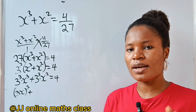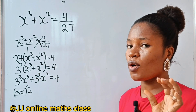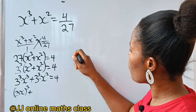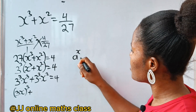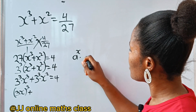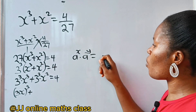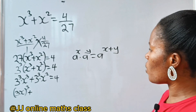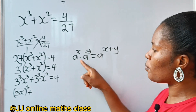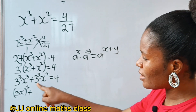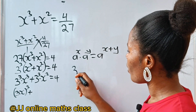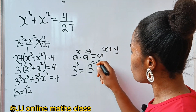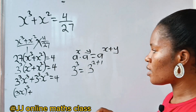Now let's recall the law of indices, or exponents, which states that a to the power of x times a to the power of y equals a to the power of x plus y. Once you have the same base, just add the powers as long as they are multiplying. So 3 to the power of 3 can be expressed as 3 to the power of 2 plus 1.